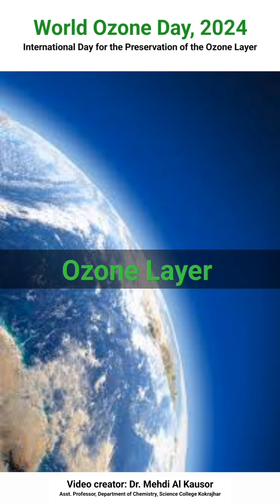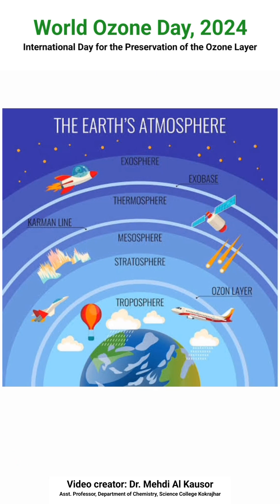Now let us know what the ozone layer is and why it is important for us. The Earth's atmosphere is made up of several layers, each with its own characteristic temperature and pressure. These are the troposphere, stratosphere, mesosphere, and thermosphere. A further region at about 500 kilometers above the Earth's surface is called the exosphere. The troposphere is the lowest part of the atmosphere, extending up to 10 kilometers from the Earth's surface. This is the part where we are living.